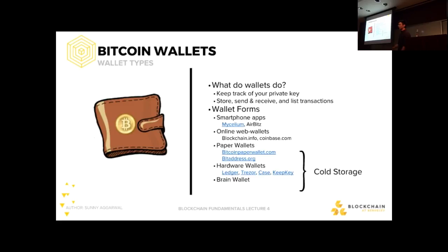Wallets come in two main flavors: hot wallets and cold storage wallets. We give them these names in relation to their connection to the internet. Hot wallets are always connected to the internet, while cold storage wallets are not. Examples of hot wallets are smartphone apps like Mycelium and Airbits. There are also online web wallets such as blockchain.info and coinbase.com. An important thing to note about online web wallets is that your private key is actually stored on a third-party cloud server, so you don't have the power to maintain your own private key.